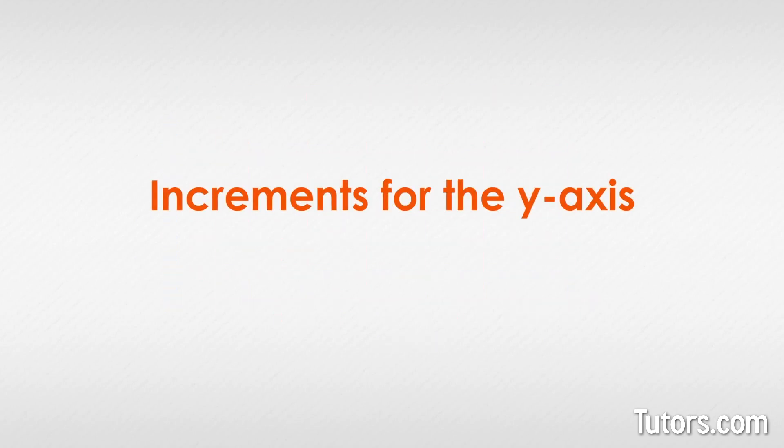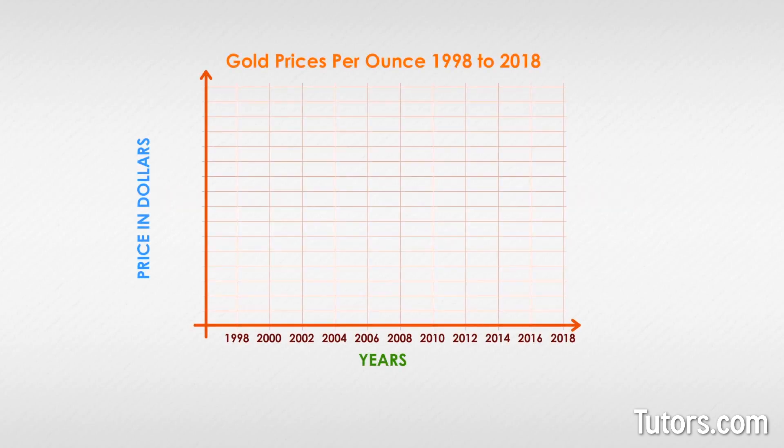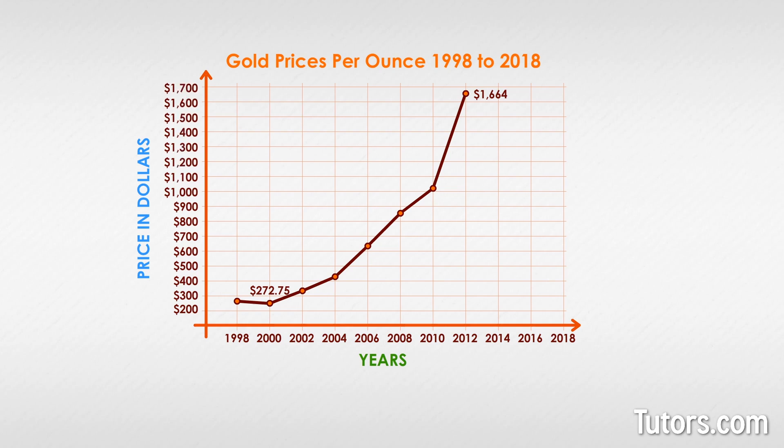Increments for the y-axis are determined by the range of data. If gold prices from 1998 to 2018 varied from a low of $272.75 in 2000 to a high of $1,664 in 2012, we do not need to start at $0 and climb by $10 increments. The graph would be absurdly tall. We could start at $200 and move up by $100 increments, ending at $1,700.